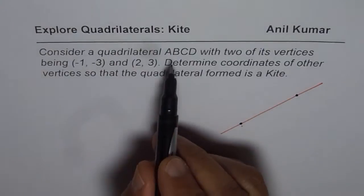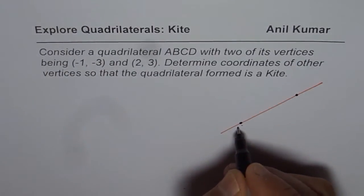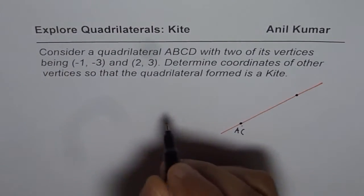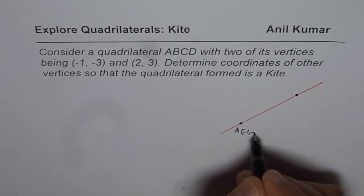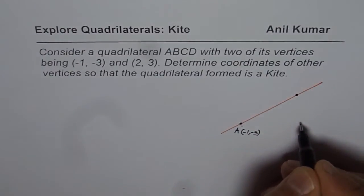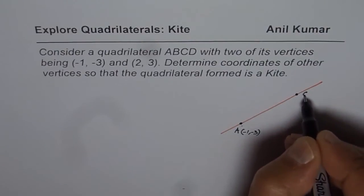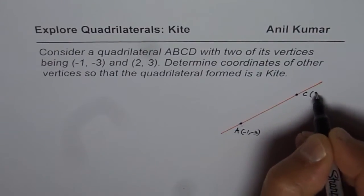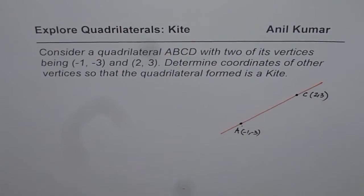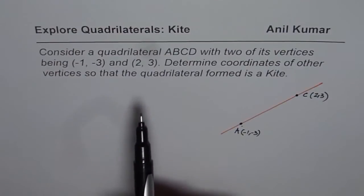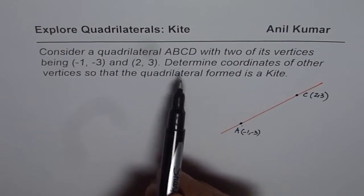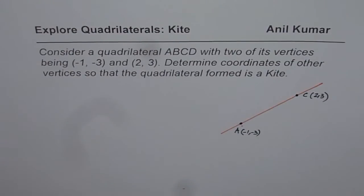So I marked my points now. And since we are saying A, B, C, D, I will assume this to be, let us say A. And coordinates of point A is (-1, -3). I'll leave B somewhere there. And then take this as C. And for me, C is (2, 3). So I get two points of the quadrilateral.